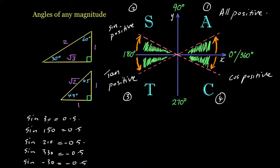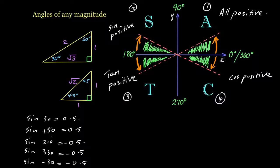When we had sine 30 we used the triangle directly to find 1 over 2. But for sine 150, there's no 150-degree triangle we can use — the same applies to 210 or 330. So what we're going to do is find a way to represent these angles using the two standard exact-ratio triangles.